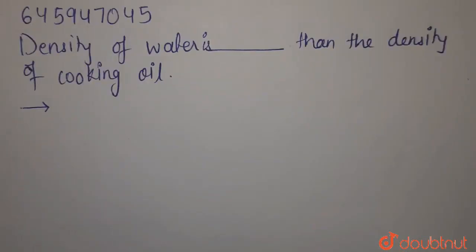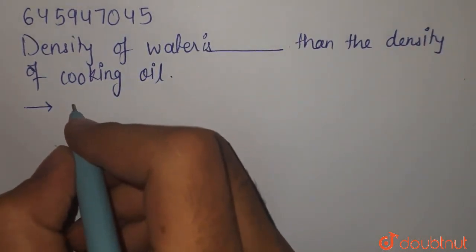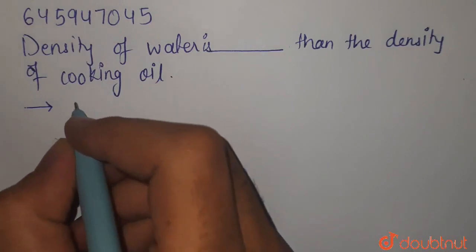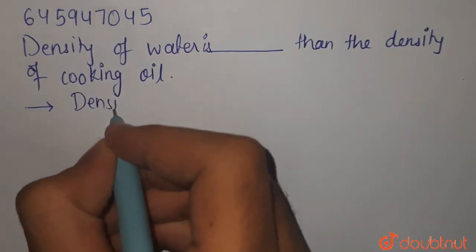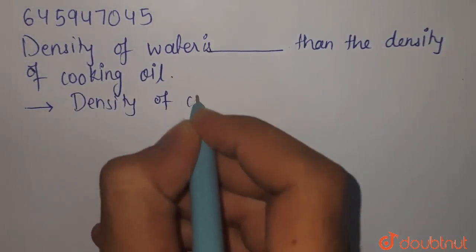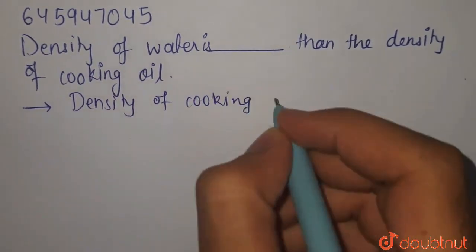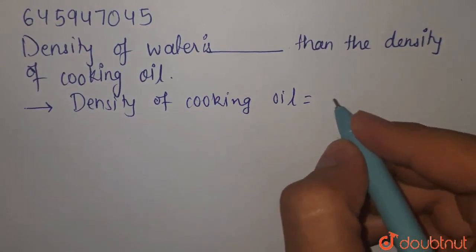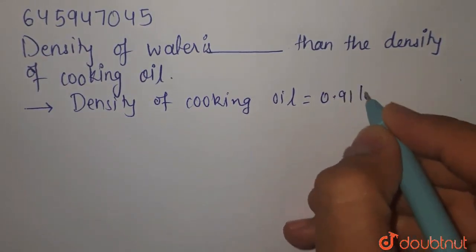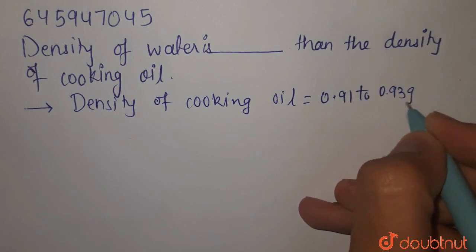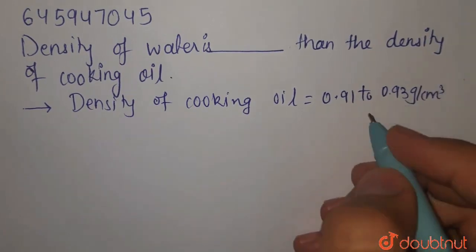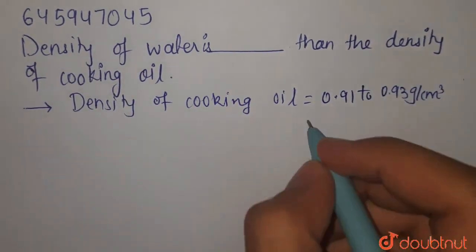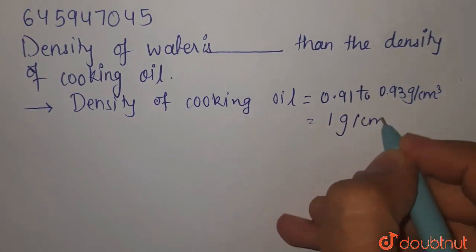Our question is: the density of water is dash than the density of cooking oil. So, let's write down the densities of water and cooking oil first. The density of cooking oil is 0.91 to 0.93 gram per centimeter cube, while the density of water is 1 gram per centimeter cube.